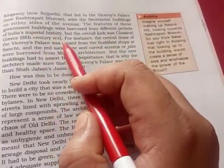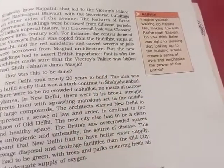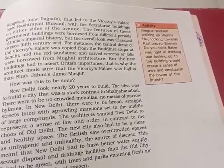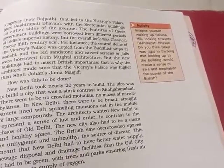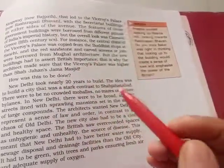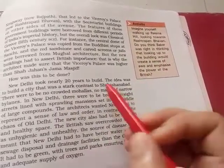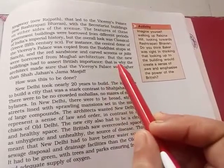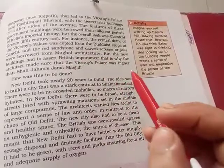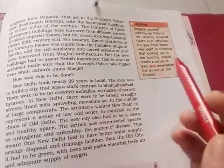The features of these government buildings were borrowed from different periods of imperial history. For instance, the central dome was inspired by the stupa at Sanchi, while the red sandstone and carved screen jalis were borrowed from Mughal architecture.